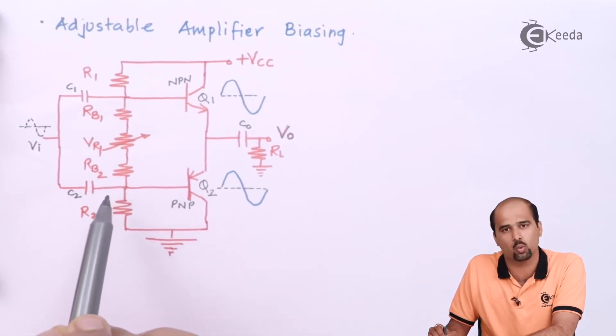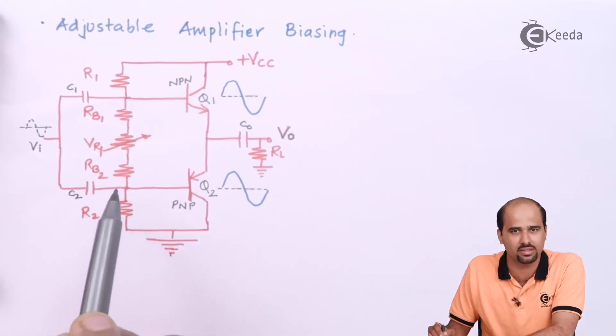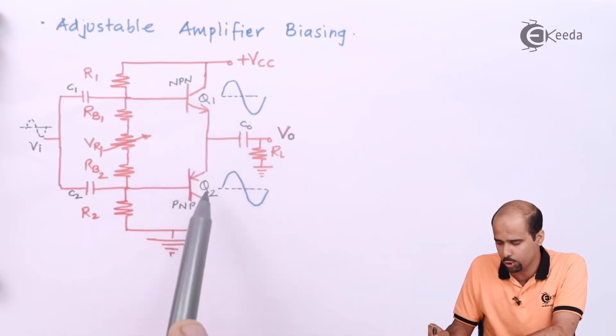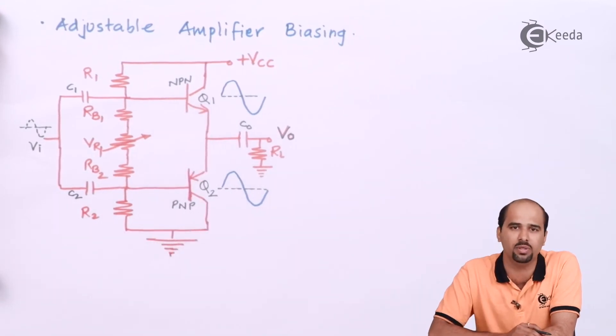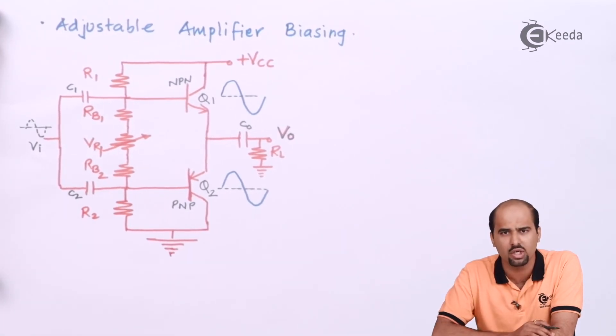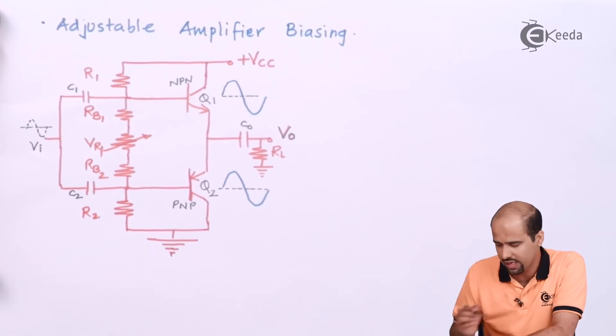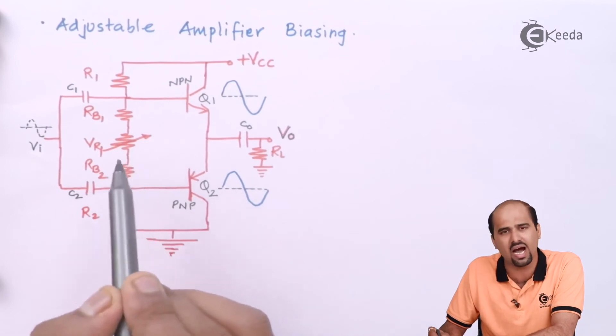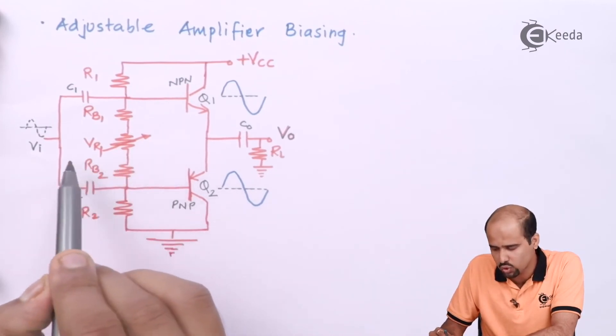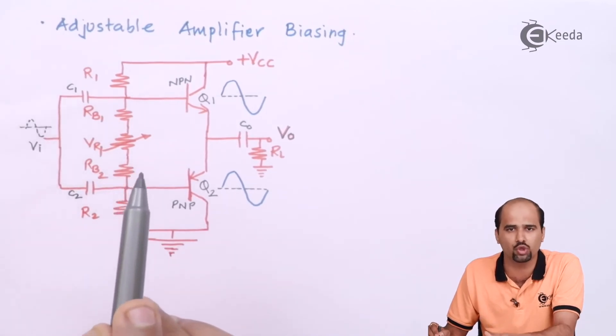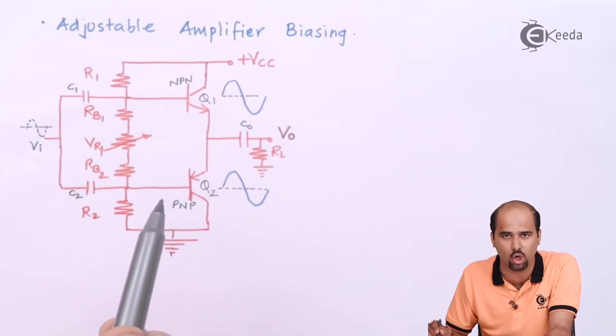Now, question arises, why do we require this? It is not ideal case that Q1 and Q2 having same VBE voltage 0.7 or 0.6. Q1 may be having 0.7, Q2 may be having 0.5. So in that case, what we'll have to do? We'll have to put one more resistance that is nothing but let's say RX. And I want to change that resistance such that I can achieve to reduce, to destroy completely that crossover distortion.